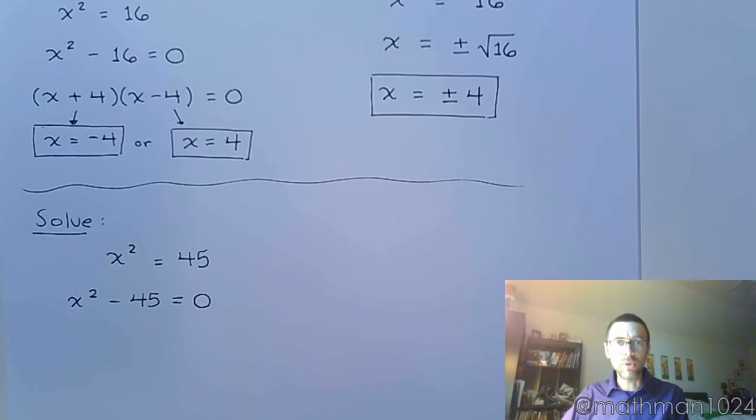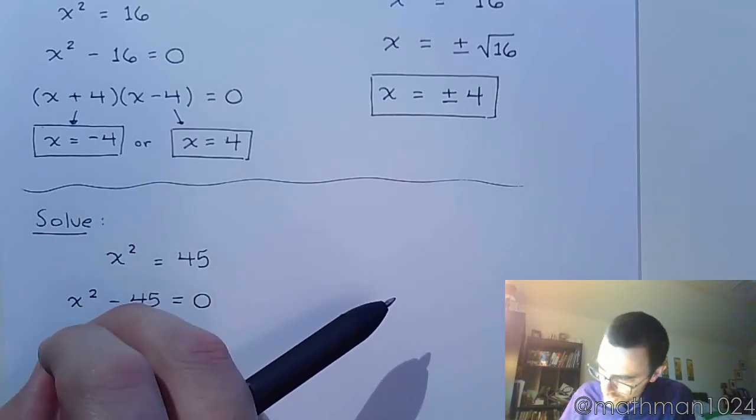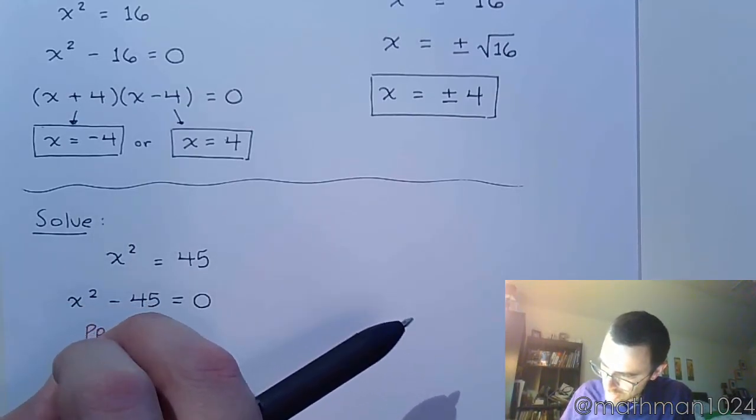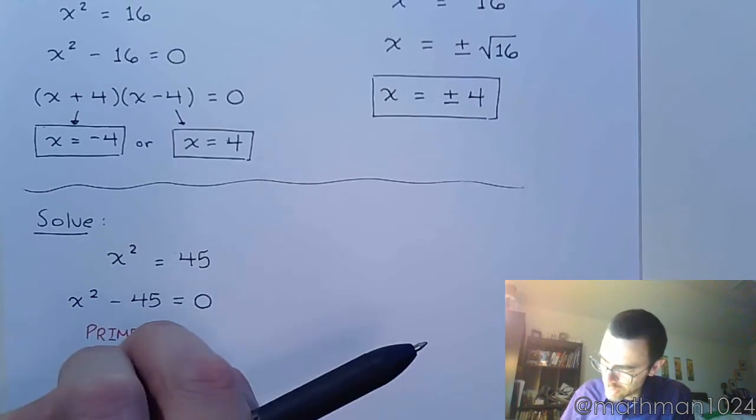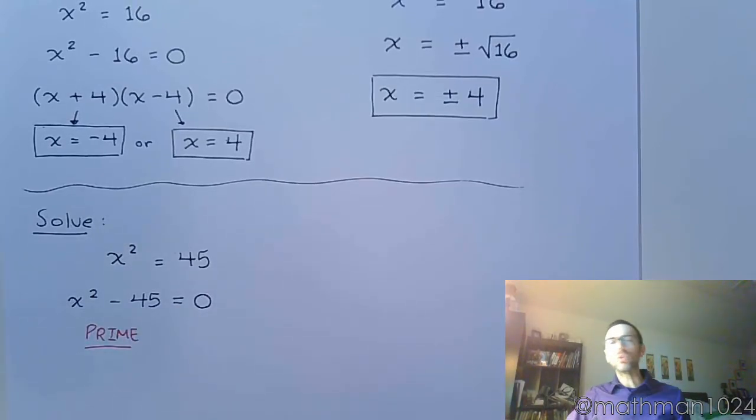Then we run into a problem, because x squared minus 45 is not a difference of two squares. So we can't do anything with that. This guy, unfortunately for us, is prime. Now, that doesn't mean no solution or anything like that. That just means we can't factor it.